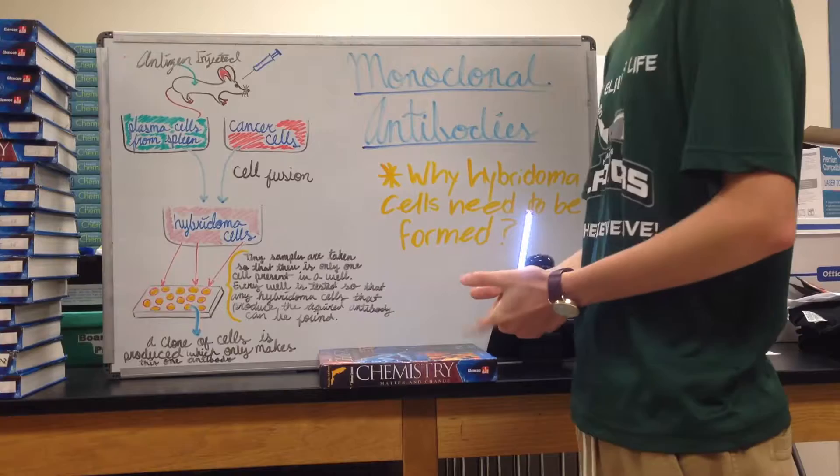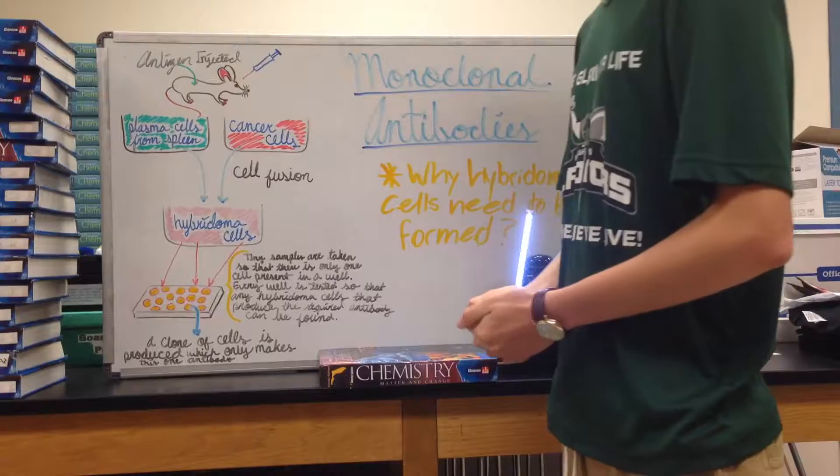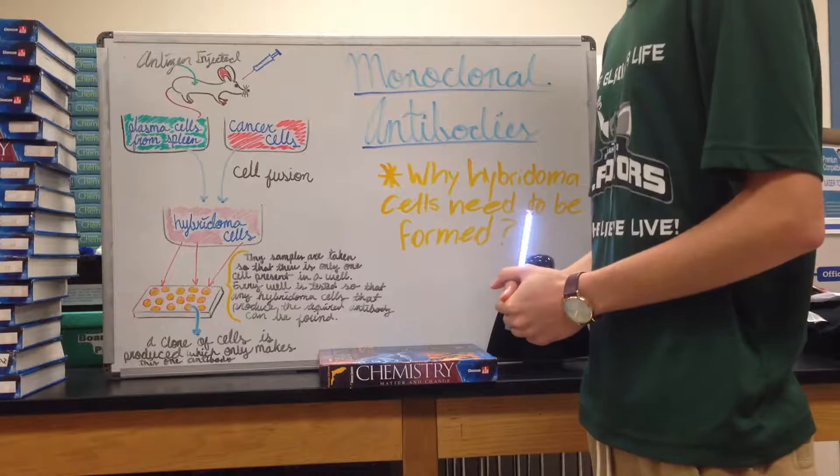We're going to be talking about monoclonal antibodies and how they're widely used to diagnose and treat certain diseases. They're usually created by injecting the desired antigen into a rodent, and then it goes through an immune response.